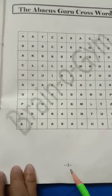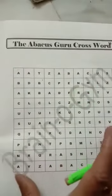Hello students, now start page number 3. The Abacus Guru Crossword. This one is the puzzle, so you find out this one in the puzzle. You find out 5 times abacus.